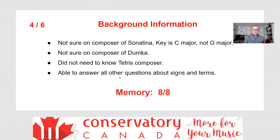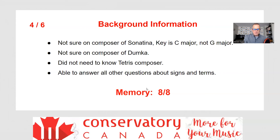Background information: in summary, he wasn't sure of the composers very well today. He didn't know the Sonatina composer, wasn't sure of the Dumka composer, and got the key wrong on the Sonatina. He didn't need to know the Tetris composer — I caught myself after asking him about that and I shouldn't have, so he doesn't lose a mark for that. But he was able to give me something about it being Russian-sounding, which kind of fits. He was able to answer all other questions about signs and terms, and you can see I did a demonstration of how the examiner can use the webcam to get specific answers. Basically, he got four things wrong, so I gave him four out of six — it's usually minus 0.5 for every mistake. Most students do get six out of six.